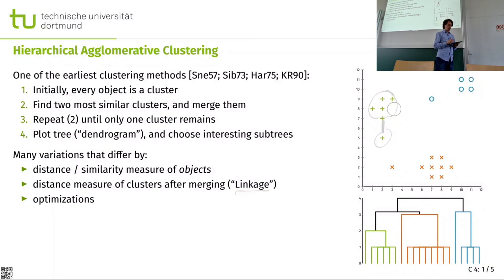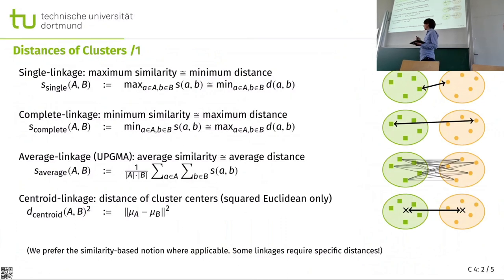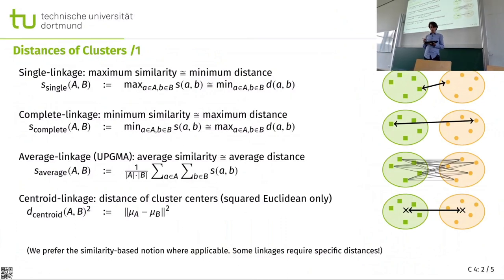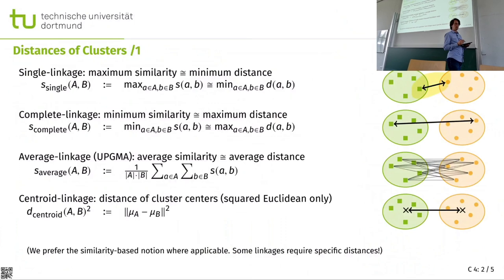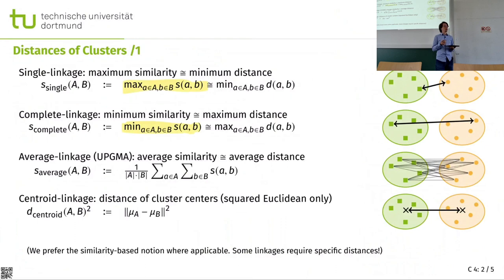We can perform different algorithmic optimizations — those were likely covered on Thursday. We have a number of common linkages; in this class we only include part of them. The early idea was to use the closest pairs. Now in terms of similarity, we look at the pair that has the maximum similarity. For complete linkage, we look at the minimum of the similarities of two points from different clusters.